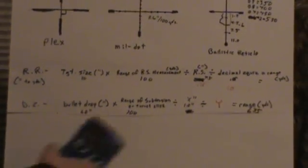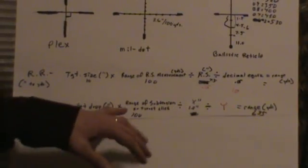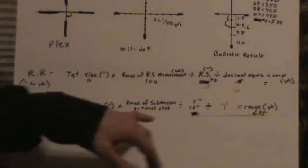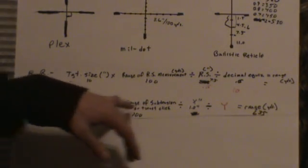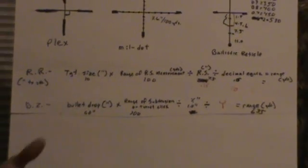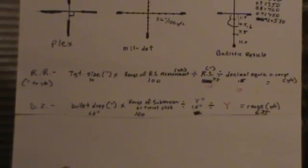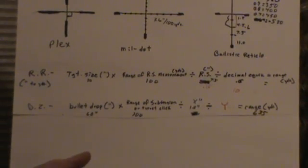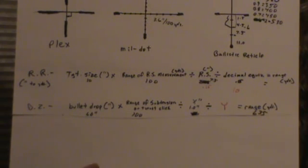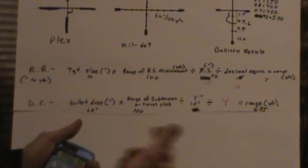I just want to make sure that a lot of people do it a different way. A lot of people use factors. They may combine the range of sub-tension divided or times the bullet drop. There's a lot of different ways to manipulate these equations.